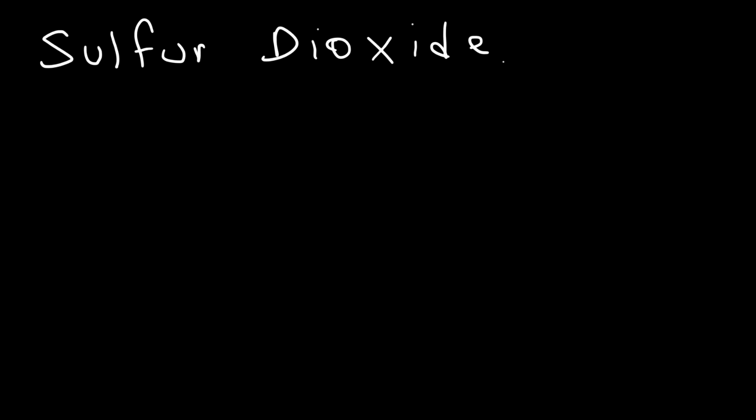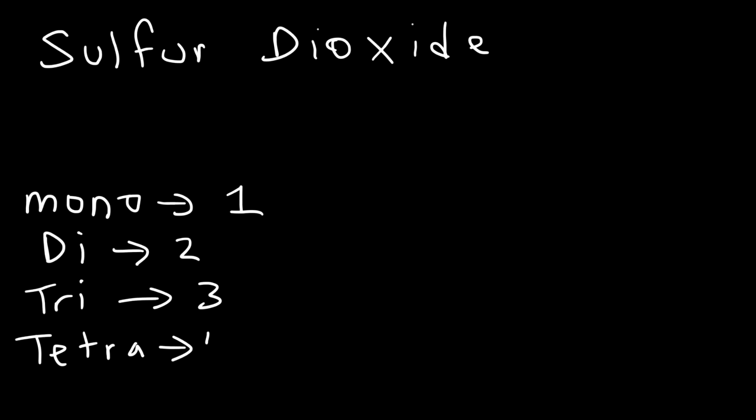Now the first thing you need to know is you need to understand what the prefixes represent. Whenever you hear the word mono, it's associated with one. Di is associated with two. Tri is three. Tetra, that's associated with the number four. Penta represents five.